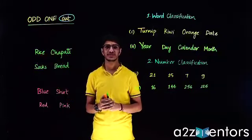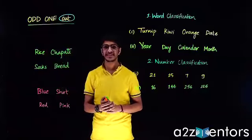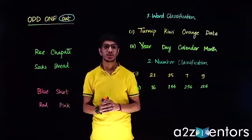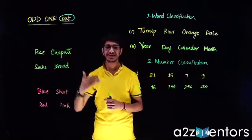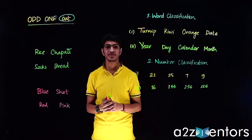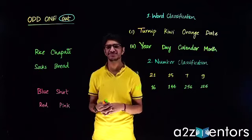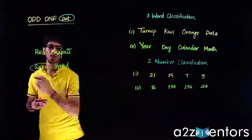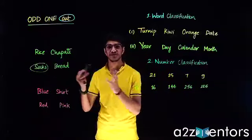For example, we have four words: rice, chapati, socks, and bread. If we see rice, chapati, and bread — these are items that we eat. But socks we don't eat; we wear them. So 'socks' is the odd one out.